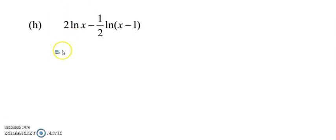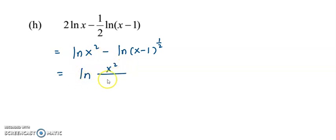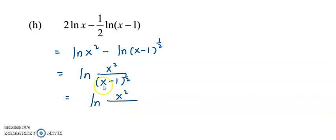For this example, bring the 2 up to become the power of x, and the same for the 1 over 2 — bring it up to become the power of (x minus 1). Check: the operation is minus and both have the same base. We can combine them by taking x squared divided by (x minus 1) to the power of 1 over 2, which can also be written as x squared divided by the square root of (x minus 1).